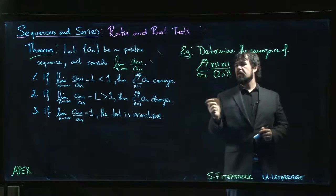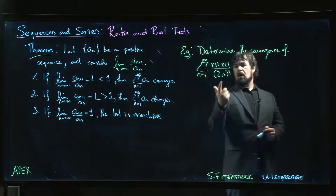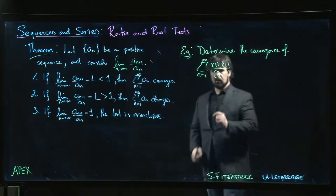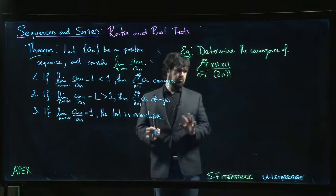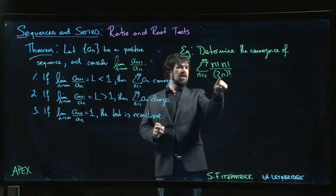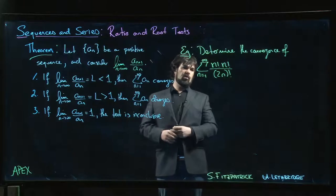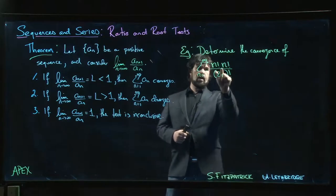Got the square of n factorial on the top, on the bottom. Now be careful, that's not just twice n factorial, right? If it was just two times n factorial, we cancel, we simplify, piece of cake. No, this means we double n and then we take the factorial, right? So 2n factorial is way way way bigger than n factorial.